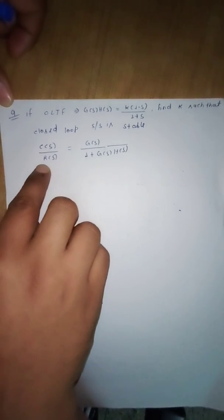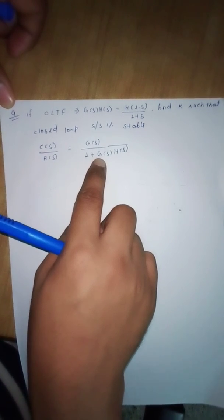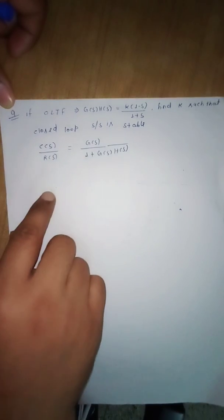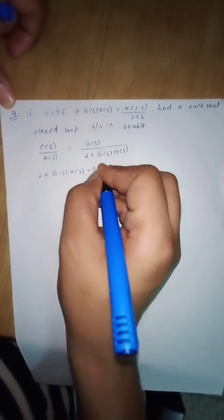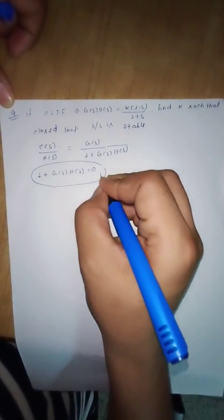So here C/R defines the closed loop transfer function, calculated as G over (1 + G·H). In the closed loop transfer function, the denominator polynomial defines the characteristic equation for the system. We can directly calculate the characteristic equation with the help of the open loop transfer function according to 1 + G(s)H(s) = 0.